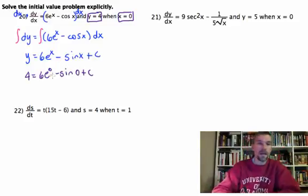And when you look at that, e to the 0 is 1, sine of 0 is 0. So 4 equals 6 times 1 plus c. So that tells us that c is going to be equal to negative 2.